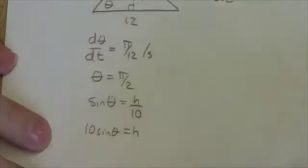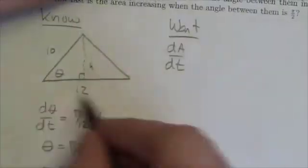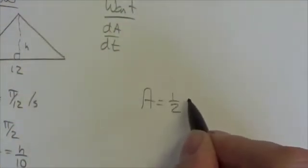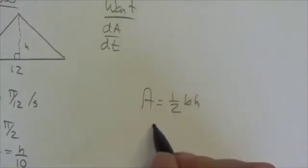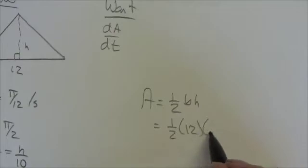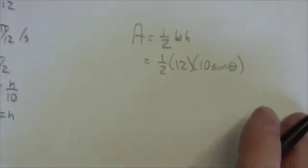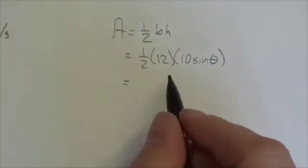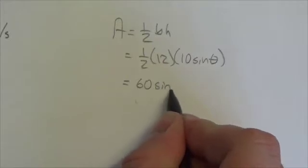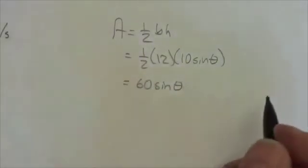That's important because now I can make a substitution. Based on this triangle right here, the area of that thing will be one half base times height. And I'll just plug this in. So this will be 1/2 times 12 times 10 times the sine of θ. So we got half of 12 is going to be 6 times 10, it'll be 60 sin θ. There's my area here.